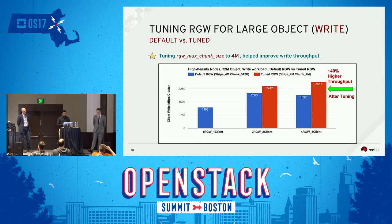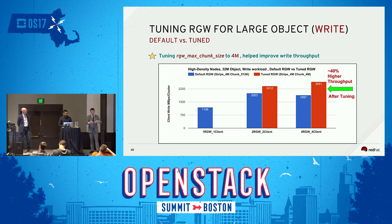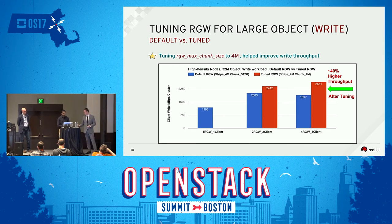At 4 MB, because we know that's the striping boundary for the RGW object, we're going to write each of the erasure-coded chunks in one fell swoop. We don't have to worry about having the EC chunks further chunked down into smaller writes. And it clearly helps.